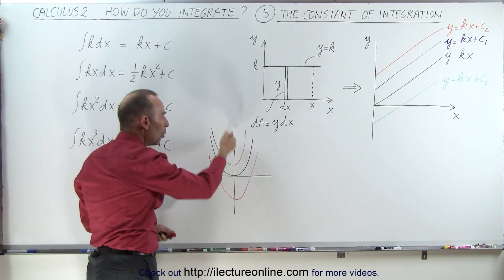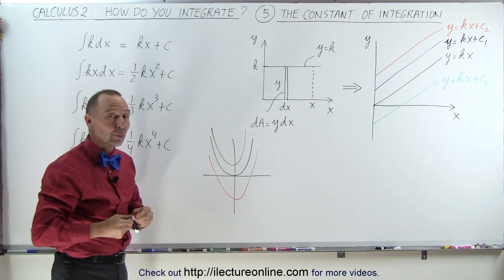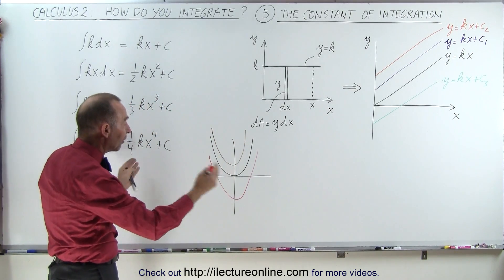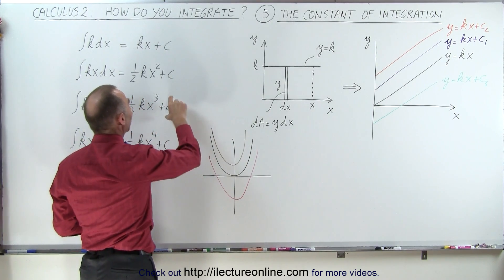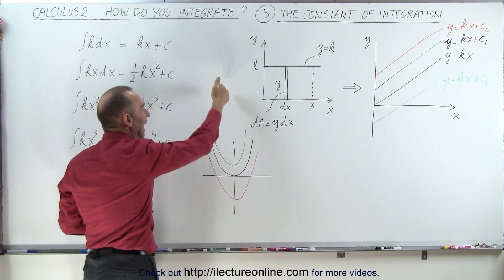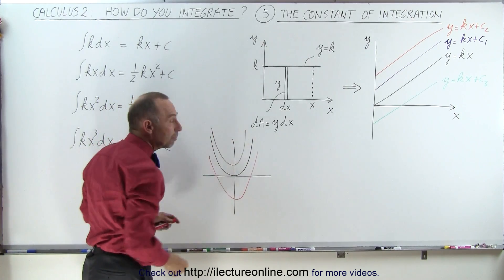In other words, we have no idea where that parabola is situated. We know the shape, we know how far it spreads out, but we don't know where the origin of that parabola is. So again, we add a constant to indicate it could be any number of infinite possibilities.